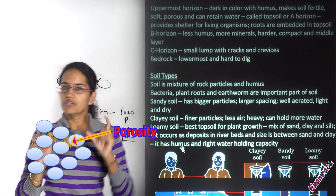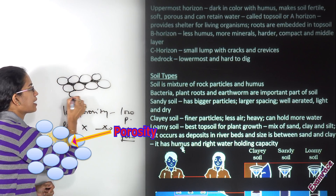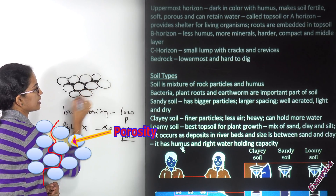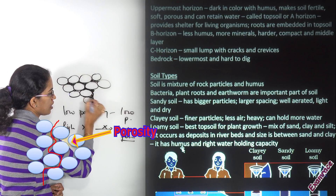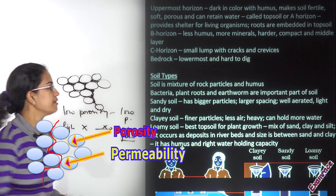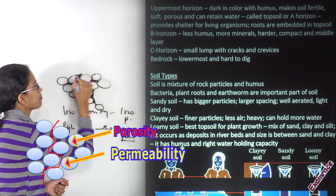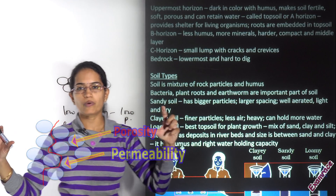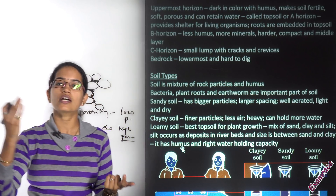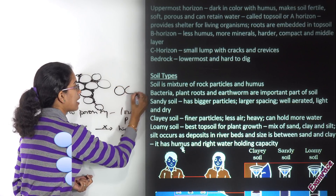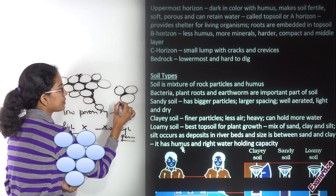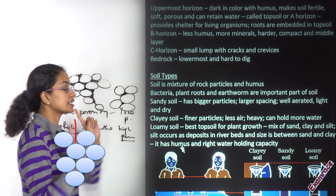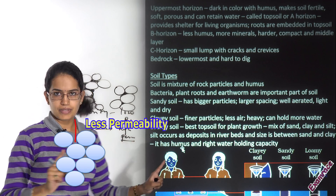Permeability means whether the pores are interconnected. If pores are interconnected from top to bottom, it is a highly permeable soil. However, as with vesicular volcanic rock, you can have a huge number of pore spaces that are independent and not connected with one another. Since they are not connected, high porosity does not necessarily mean high permeability.